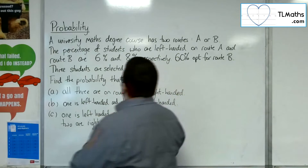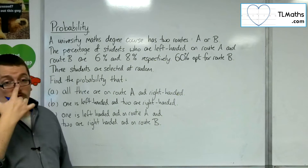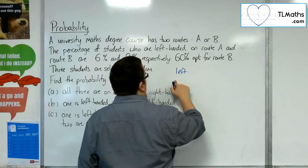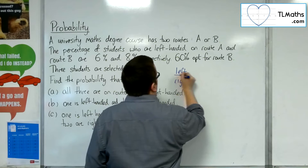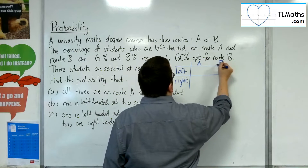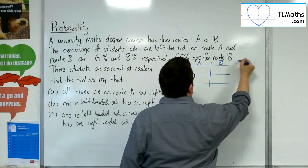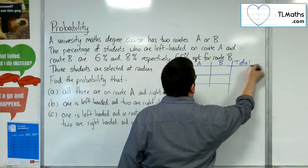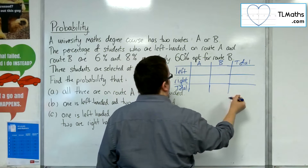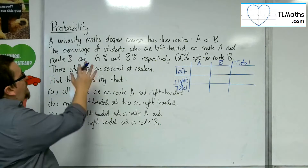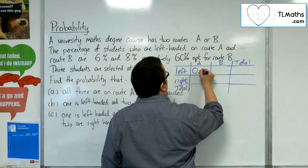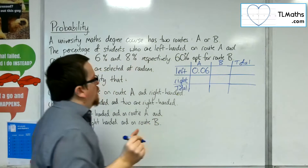We want to draw a two-way table that represents this information. We've got left-handed and right-handed, and we're also going to have A and B and totals. So we've got 6% who are left-handed on route A — I'm going to write that as a decimal, so 0.06.